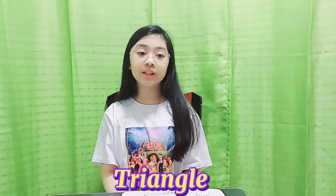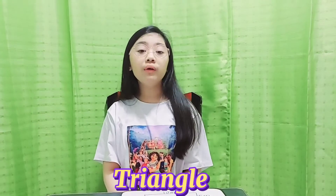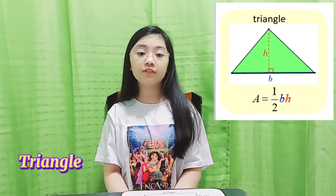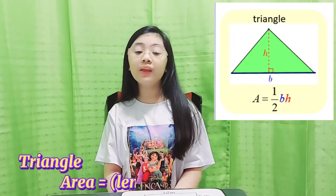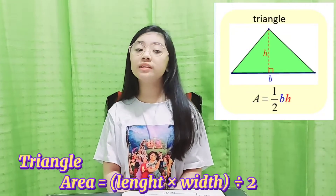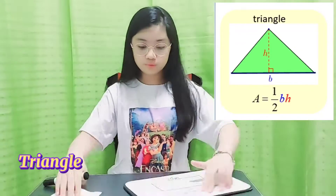Next is the triangle. A triangle is a closed, two-dimensional shape with three straight sides. In getting the area of a triangle, we have to multiply the length and the width then divide it by two.